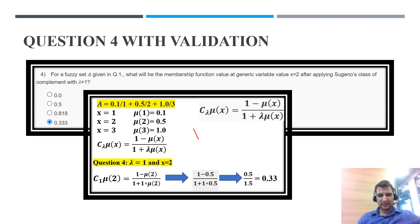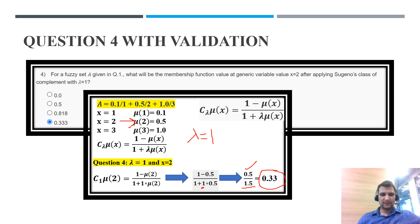Question 4: now lambda becomes 1. For x equals 2, the membership value is 0.5. So the formula gives: 1 minus 0.5 equals 0.5 in the numerator, and 1 plus lambda times 0.5 equals 1 plus 0.5 equals 1.5 in the denominator. The final answer is 0.5 divided by 1.5, which is approximately 0.33. Therefore option D is the correct answer.